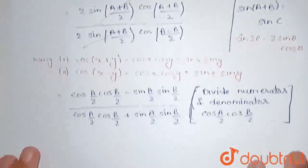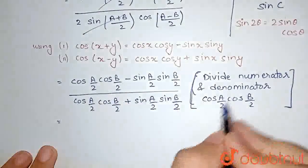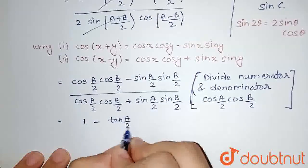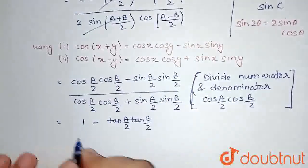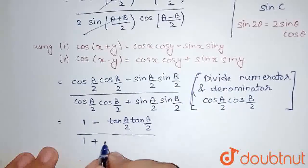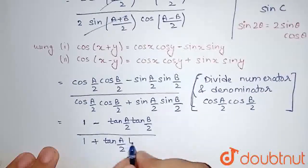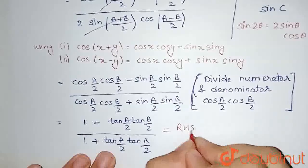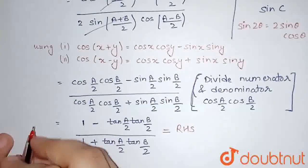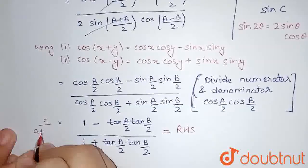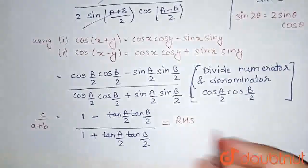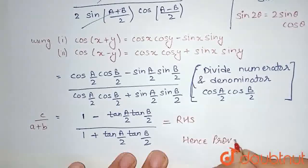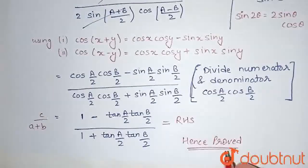Dividing both numerator and denominator by cos(A/2)·cos(B/2), the numerator becomes 1 − tan(A/2)·tan(B/2) and the denominator becomes 1 + tan(A/2)·tan(B/2). This is exactly our RHS. We had c/(a+b) on the LHS and we have proved it equals the RHS. Hence proved.